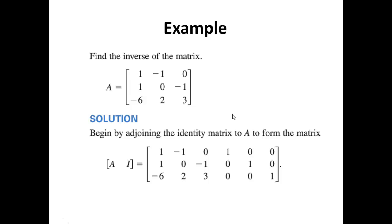Example: Find the inverse of the matrix A. It's a 3 by 3 matrix using the Gauss-Jordan elimination procedure. Step 1: We adjoin the identity matrix I to the matrix A to form the matrix [A, I]. This is our A and this is our I. The next step would be to row reduce A if possible to the matrix I, and at the same time we would be transforming I to A inverse.